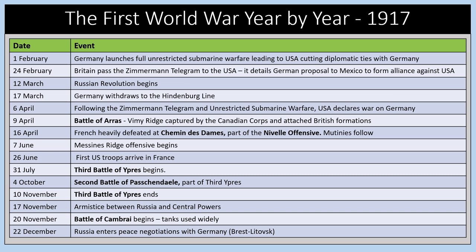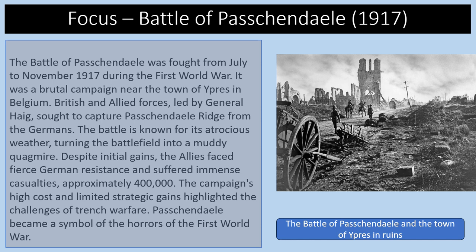In 1917, Germany launched full unrestricted submarine warfare, leading the USA to cut diplomatic ties. Britain passed the Zimmermann telegram to the USA, detailing a German proposal for Mexico to ally against the USA. The Russian Revolution began in March 1917. America entered the war on the 6th of April 1917. The Third Battle of Ypres, also known as the Battle of Passchendaele, began on the 31st of July. An armistice between Russia and the Central Powers followed in November after the Bolshevik Revolution. Russia entered peace negotiations with Germany at Brest-Litovsk in December 1917.